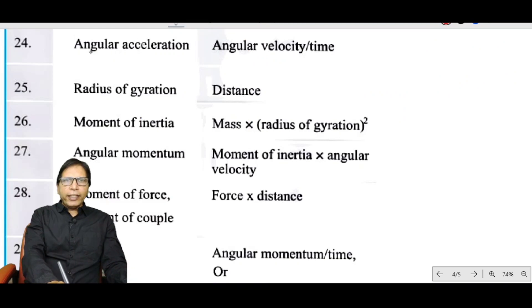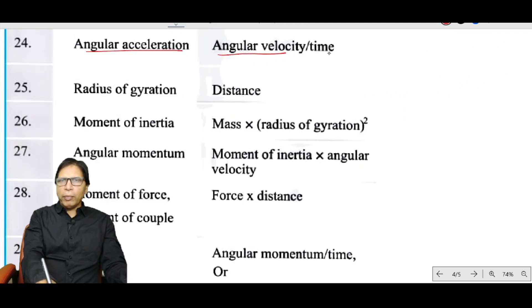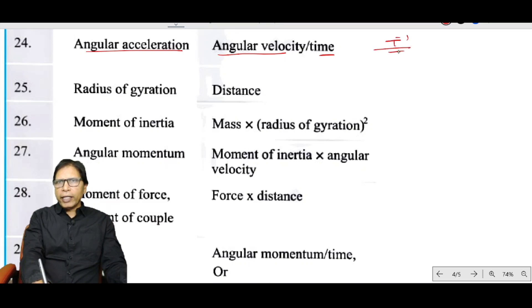Angular acceleration equals angular velocity divided by time. The dimension of angular velocity is T⁻¹ divided by T, giving T⁻².